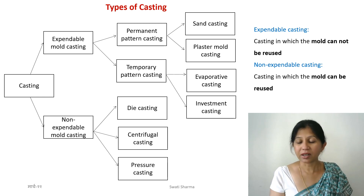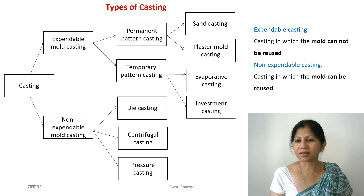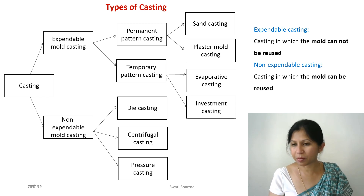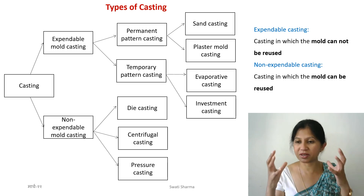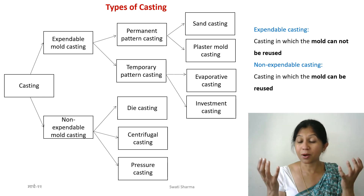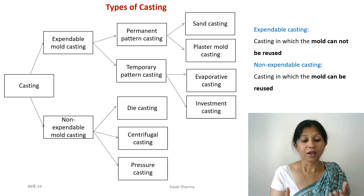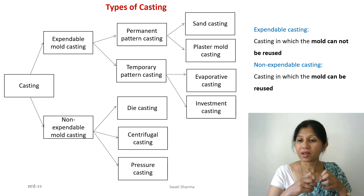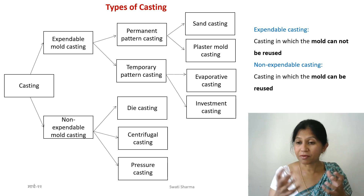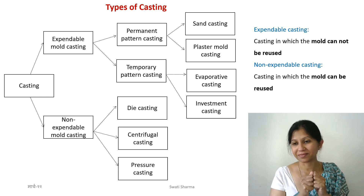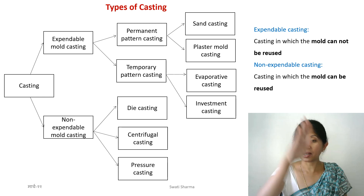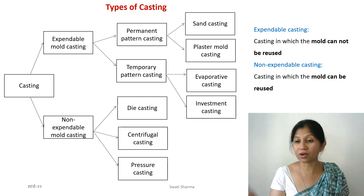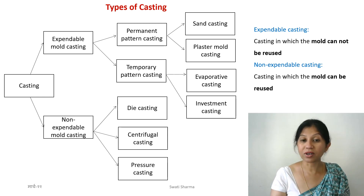One very common non-expendable process is die casting, used for making things like coins. The mold itself has a specific shape and you press the molten metal with high pressure inside it, so it fills the die and you get your shape.